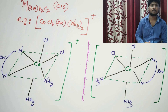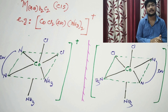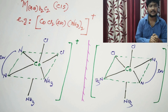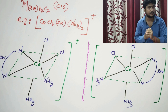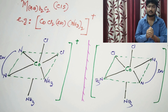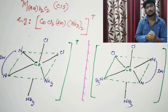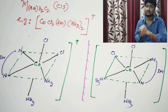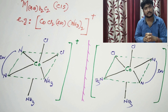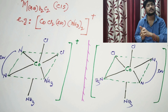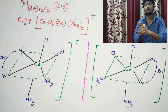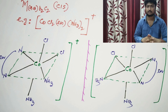In the next example, MAAB2C2 — that is [Co(en)(NH3)2Cl2] — we take the cis isomer and make a mirror image. We get another structure, and these two structures are not superimposable to each other. So we get an optical isomerism of the cis compound.